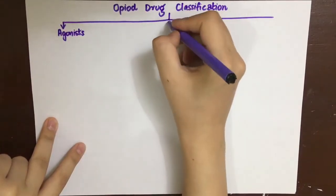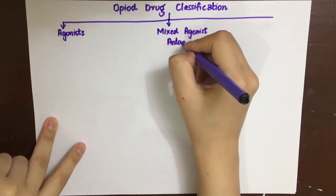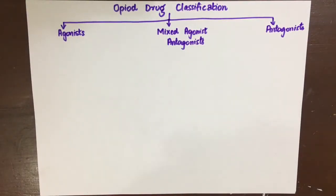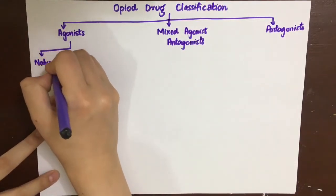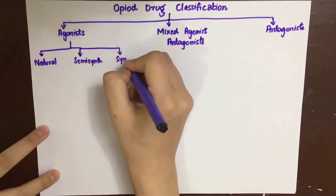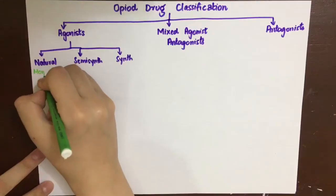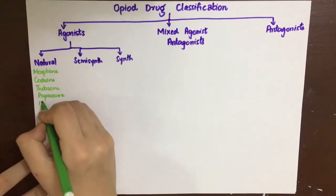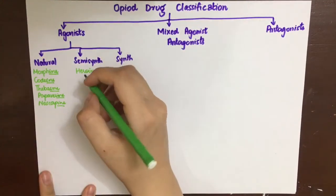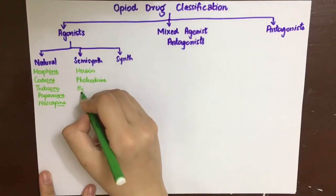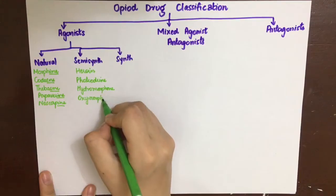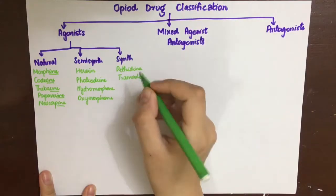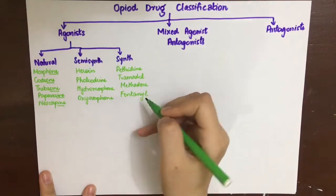The classification of opioid drugs includes agonists, mixed agonist-antagonists, and pure antagonists. Agonists are further divided into naturally derived, semi-synthetic, and synthetic. Naturally derived includes morphine. Semi-synthetic includes heroin, folcodine, hydromorphone, and oxymorphone. Synthetic ones include pethidine (also known as meperidine), tramadol, methadone, and fentanyl — notably, Michael Jackson died from fentanyl overdose.